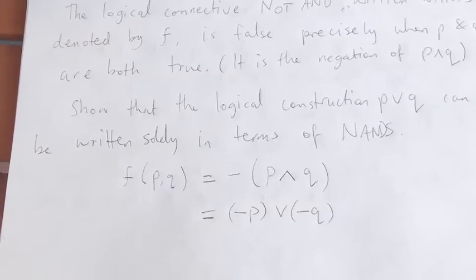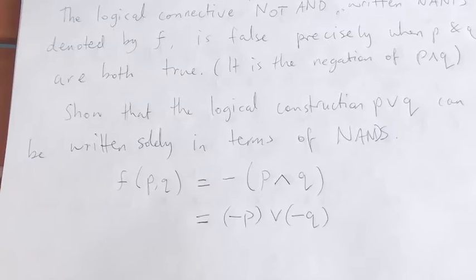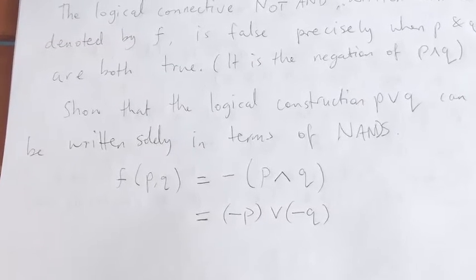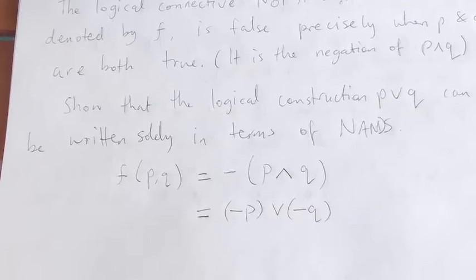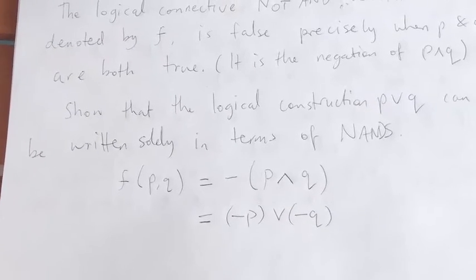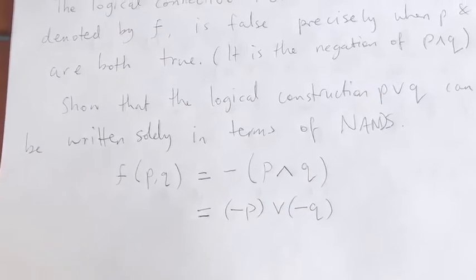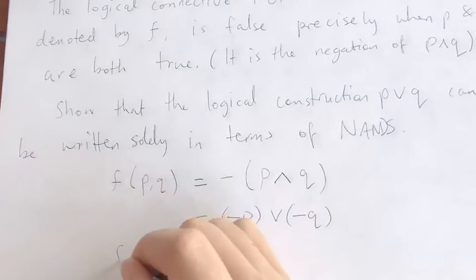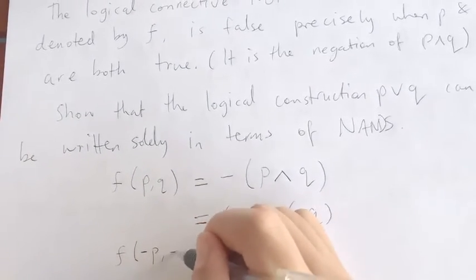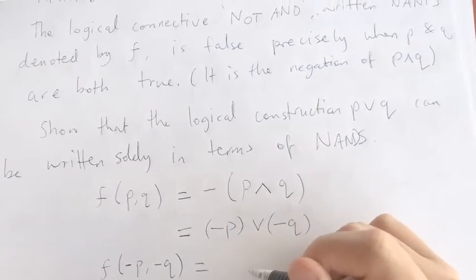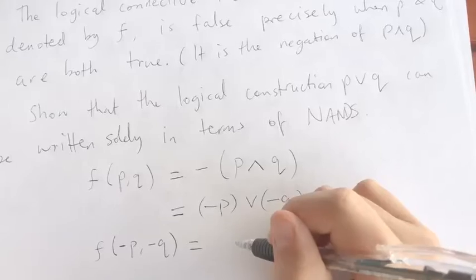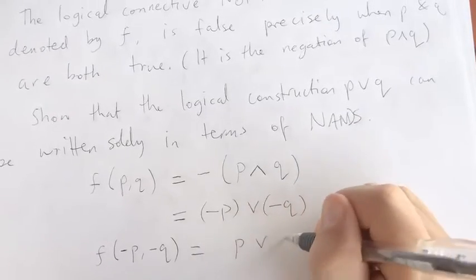So from this, you can see that if you just replace P by the negation of P and Q by the negation of Q, you get that